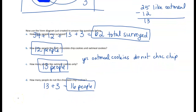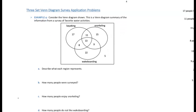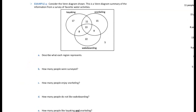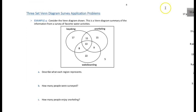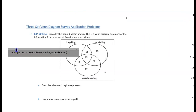Now let's start with a three-set Venn diagram. Example 4: consider the Venn diagram shown and answer parts A through E. Starting with Part A — describe what each region represents. The 17 people are within the kayaking set but outside the snorkeling and wakeboarding sets, so they like kayaking only, or kayaking but not snorkeling and not wakeboarding.